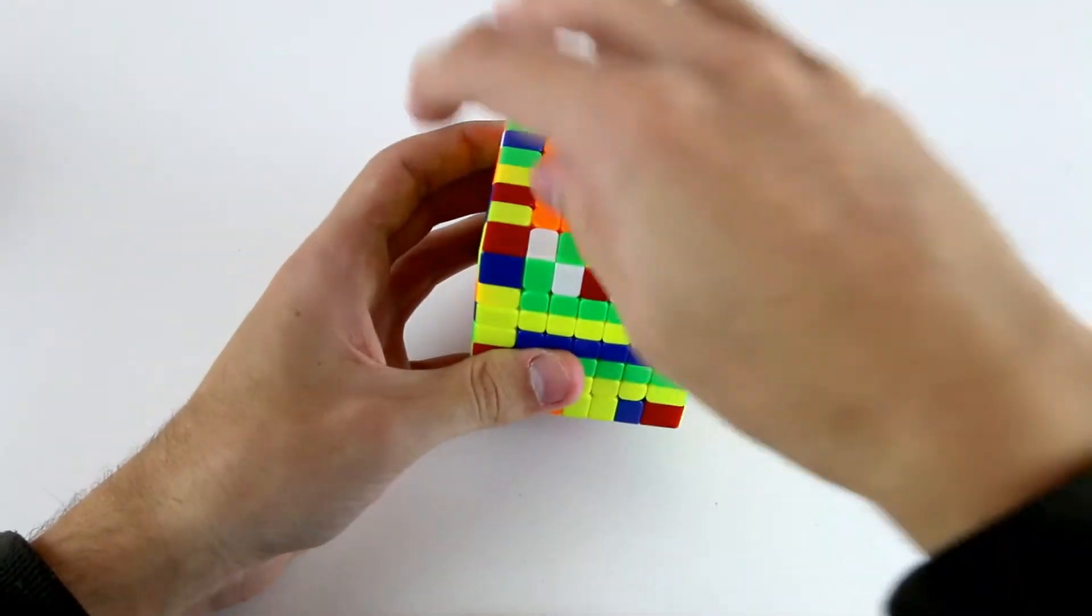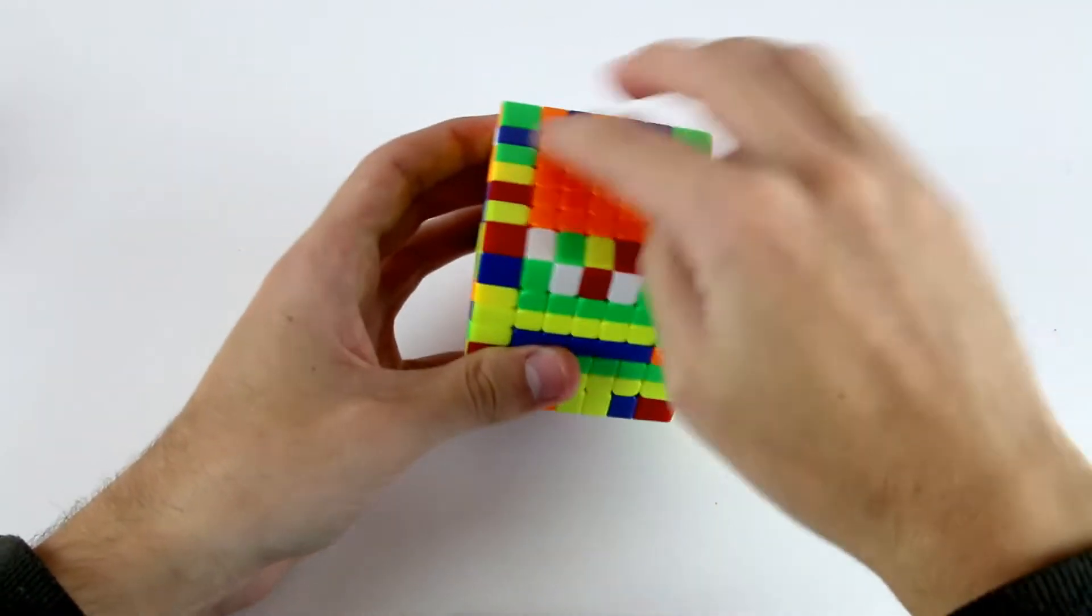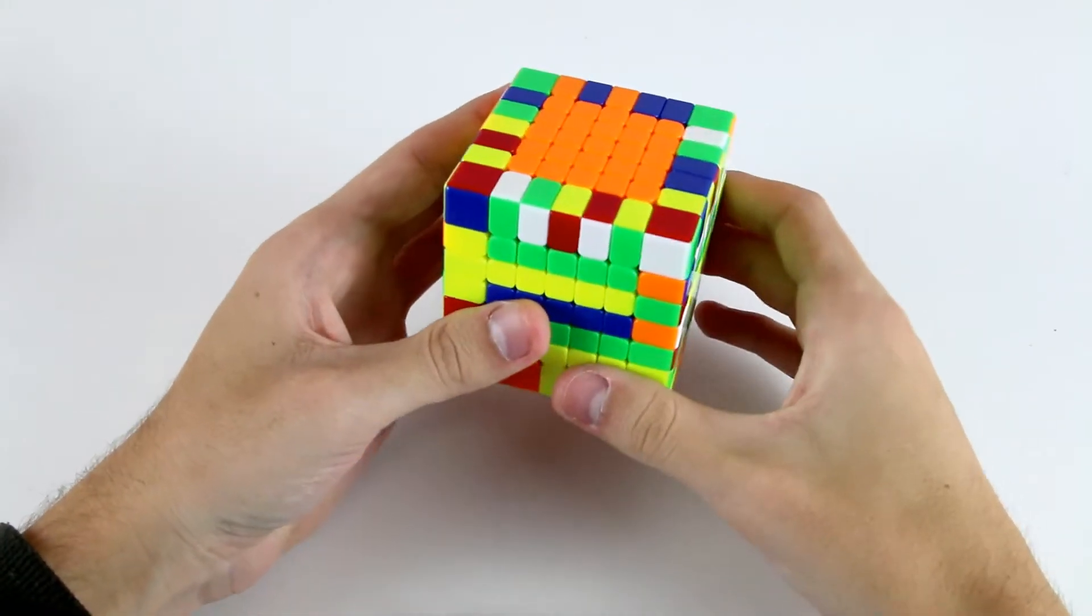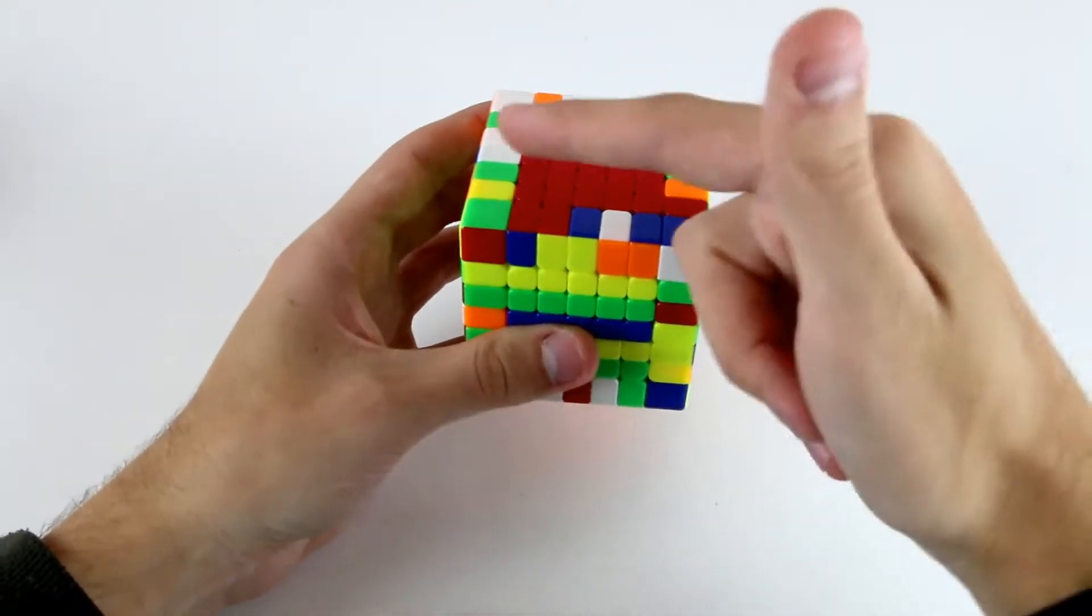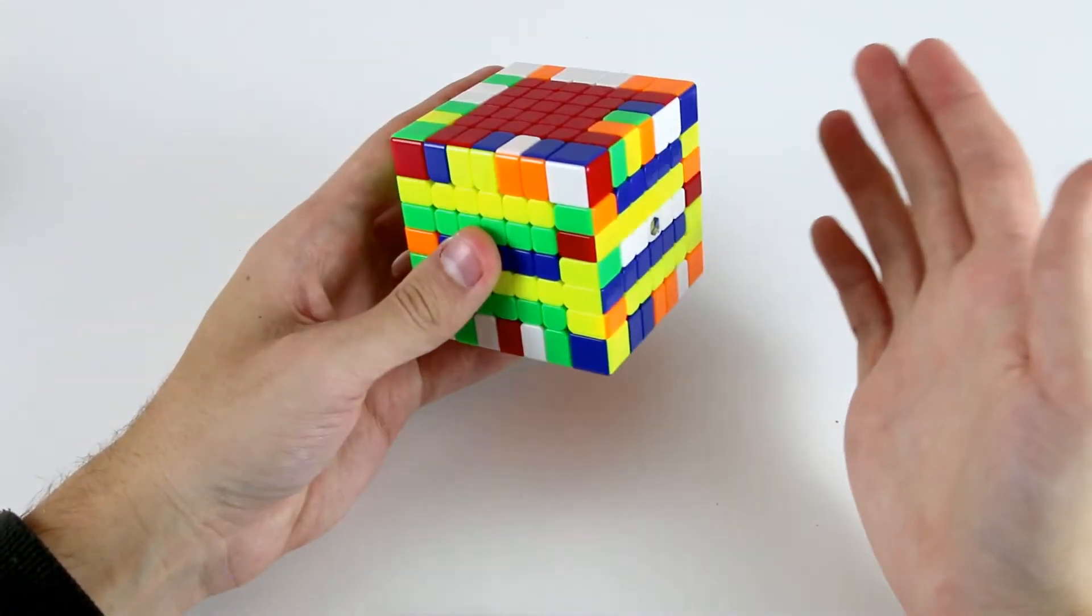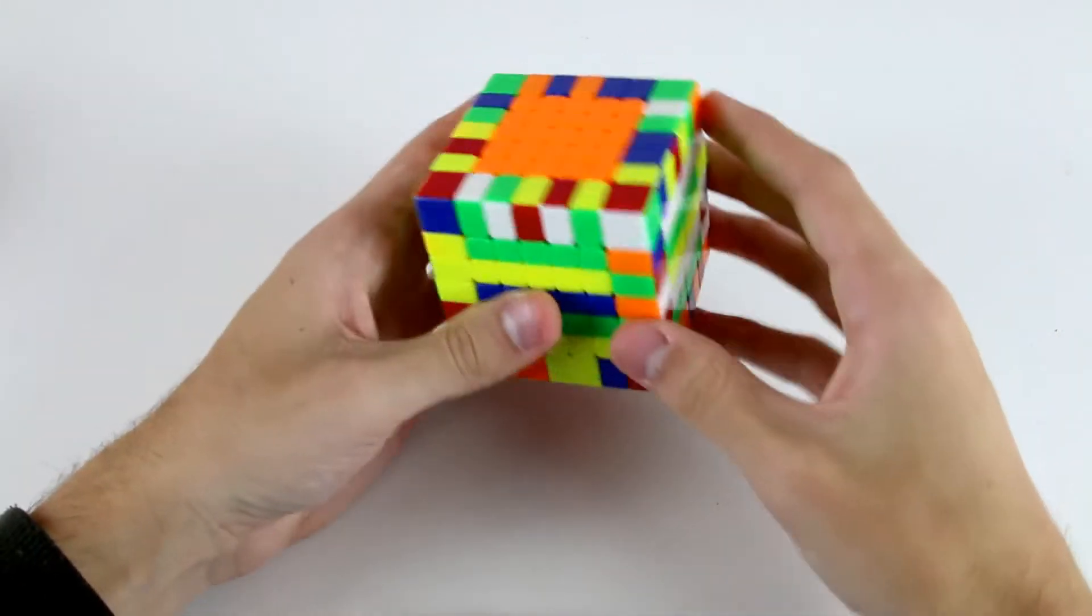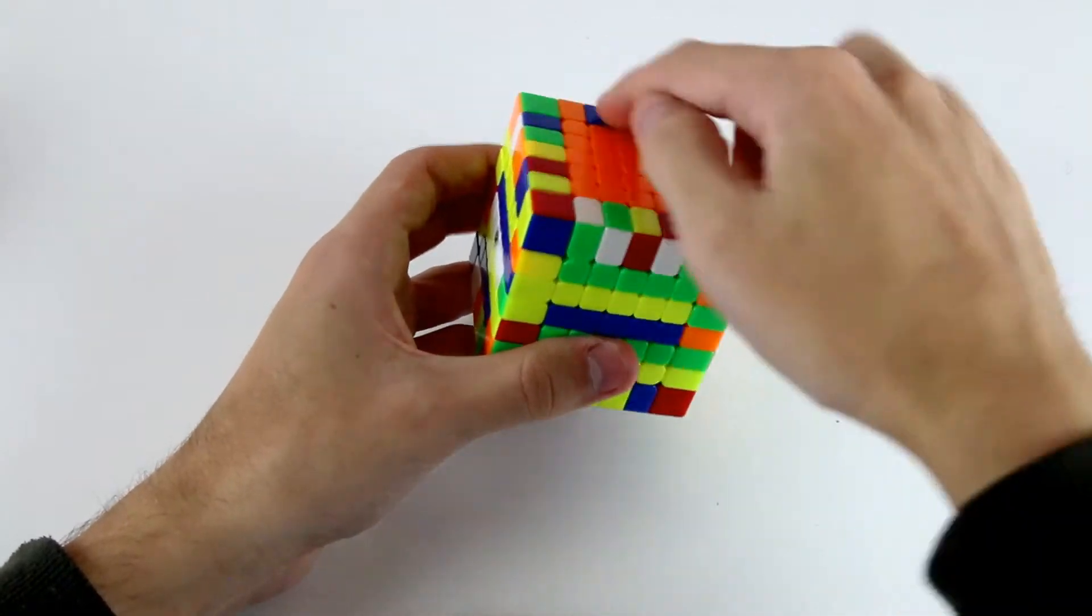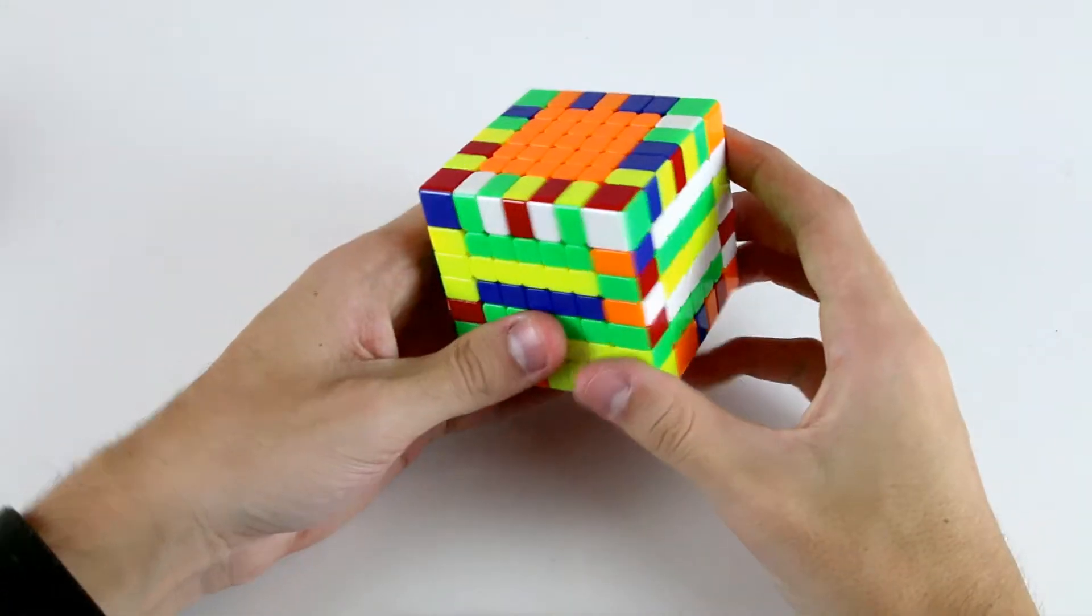However, the downside with storing four edges all on one face to begin with is that you will have to do some rotations between faces sometimes to find particular pieces which are part of the edges you're solving, because they won't necessarily always be accessible on this top face or around this slice.